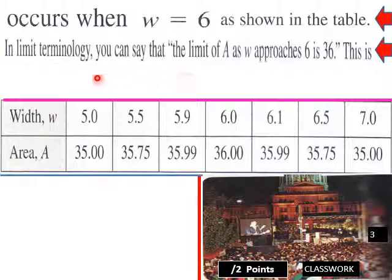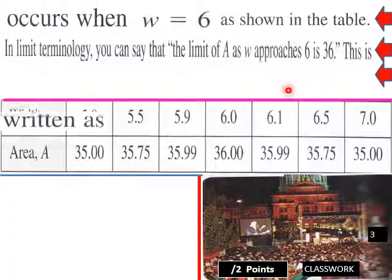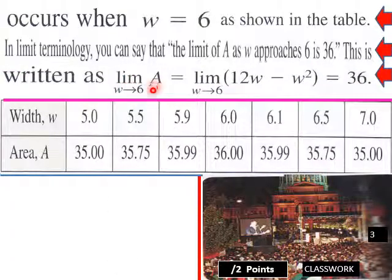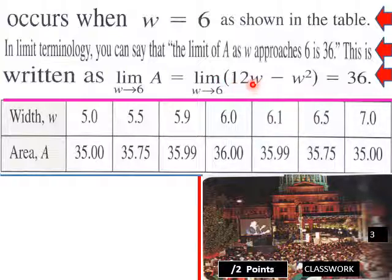In limit terminology, you can say that the limit of A as w approaches six is 36, written as: the limit of A as w approaches 6 equals 36. Plugging into the formula in terms of w gives 12w minus w squared equals 36. You solve for w — it's a quadratic — find your zeros on the graphing calculator.